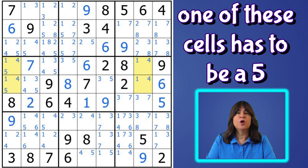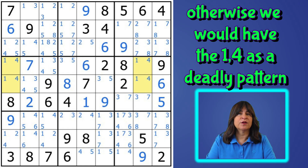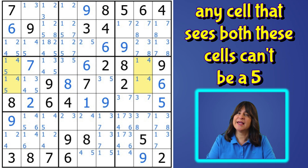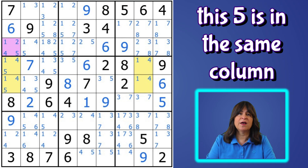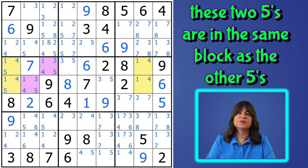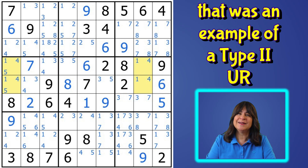One of these cells is a five — otherwise we would have the one-four as a deadly pattern. So if one of these cells is a five, then any cell that sees both these cells can't be a five. This five is in the same column as these two cells, so we can eliminate this five. And these two fives are in the same block, so we can eliminate these two as well. That was a type two unique rectangle. Let's call it a UR so we don't have to keep saying unique rectangle.